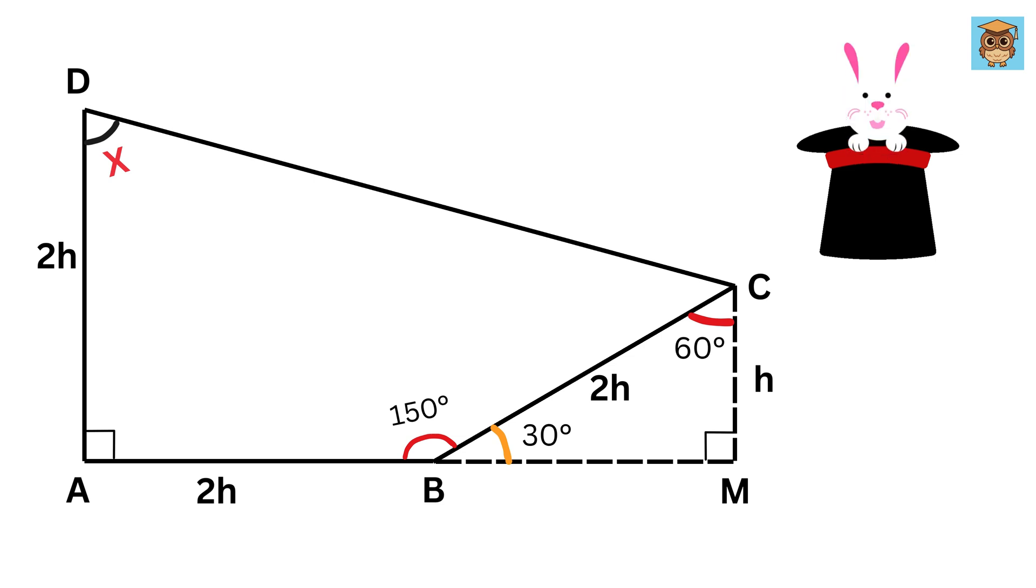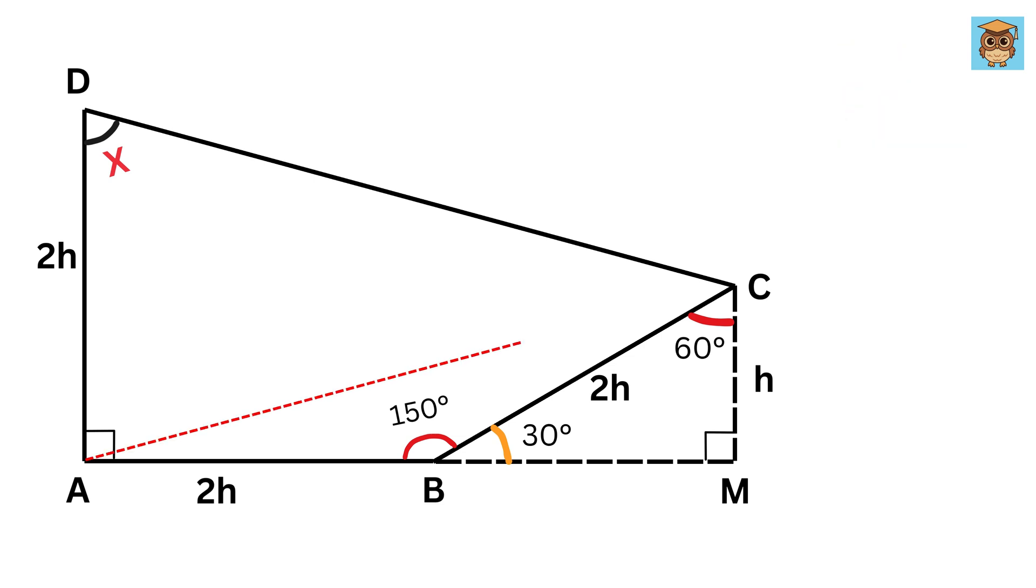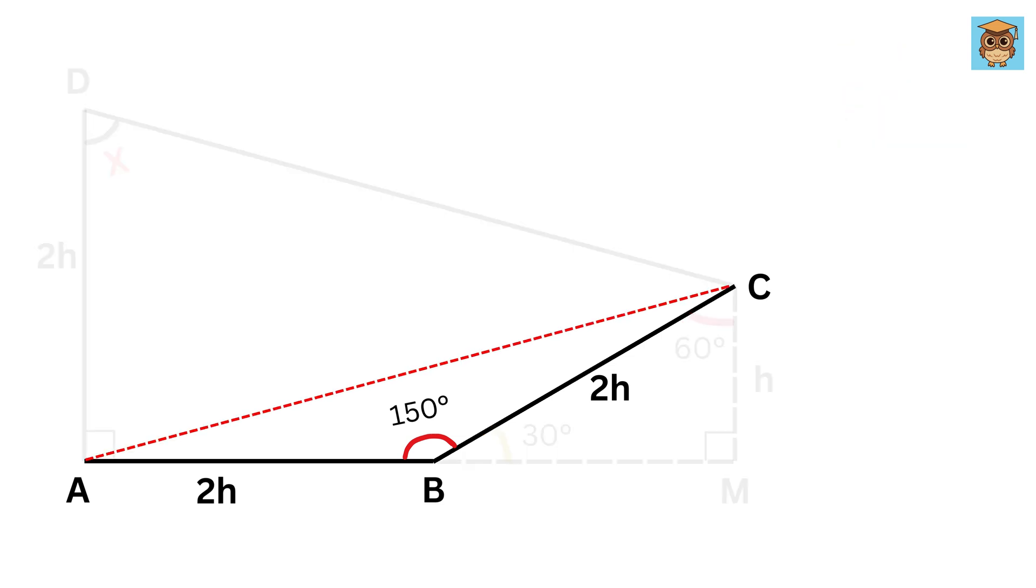Okay, now here comes the magic. Connect points A and C like this. What can you say about the triangle ABC? Since sides AB and BC are equal, triangle ABC is an isosceles triangle. We already know angle ABC is 150 degrees, so the other two angles must be equal. Now their sum will be equal to 30 degrees, because we know that all angles in a triangle add up to 180 degrees. Therefore, each of these angles is equal to 30 over 2 or 15 degrees.